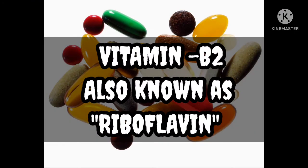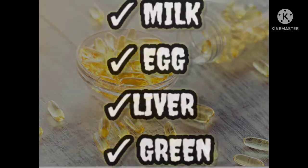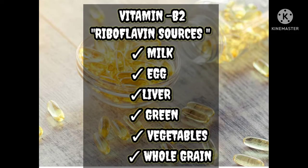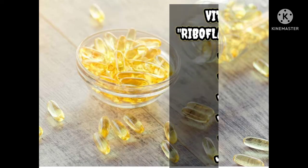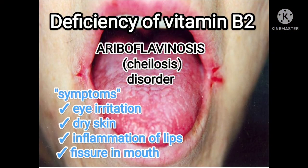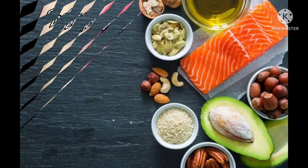Vitamin B2 is also known as riboflavin. It is richly found in milk, egg, liver, green leafy vegetables, and whole grains. Deficiency of Vitamin B2 leads to ariboflavinosis, a disorder whose symptoms include eye irritation, dry skin, inflammation of the lips, and fissures in the mouth.